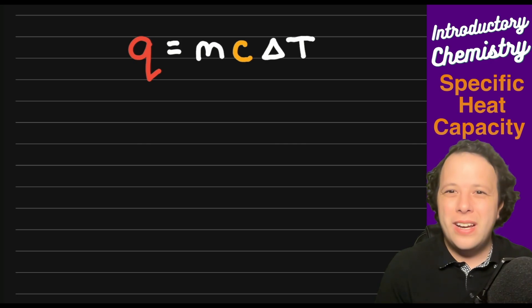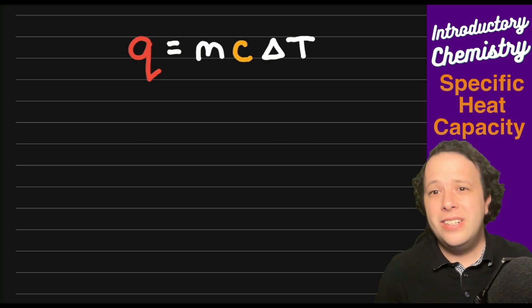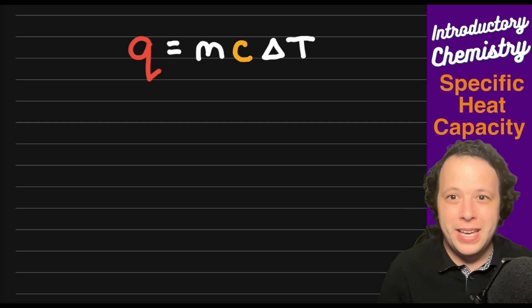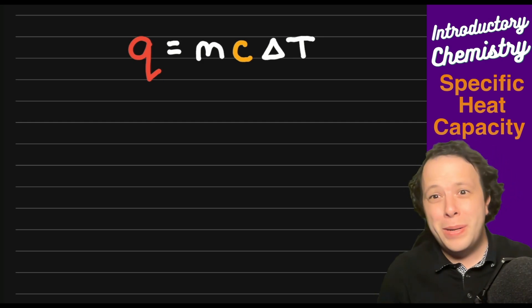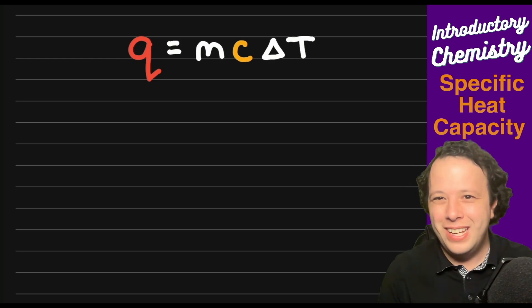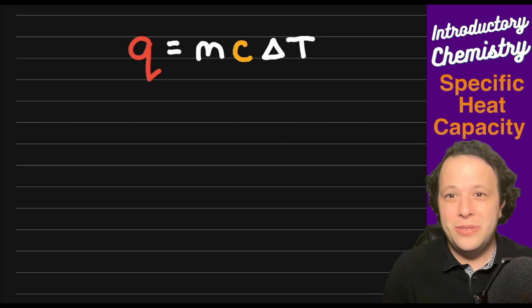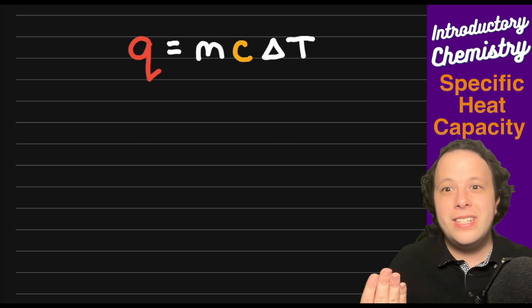When it comes to calculating heat generally in introductory chem there's two equations. This video will cover just one which is the MCAT equation. For all my premeds out there, MCAT is an exam one day you'll have to take. So MC delta T, think MCAT. So how can we use this? Let's go over what each of these letters mean.